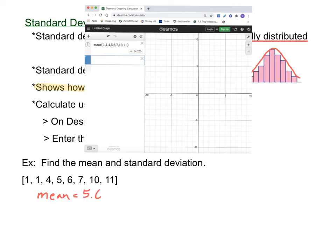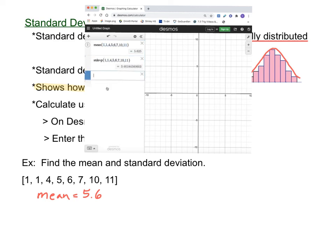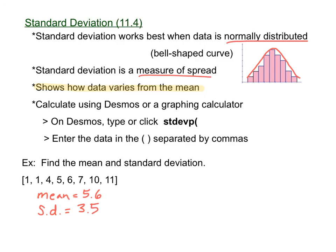To find the standard deviation, we can type STDEVP and then a parenthesis and then type the same values there. Hit enter and there we can see our standard deviation is about 3.4618. Rounding that to one decimal place, the standard deviation would be about 3.5. You will have a question on your test where you'll need to calculate the mean and the standard deviation, and you should use Desmos to do that.